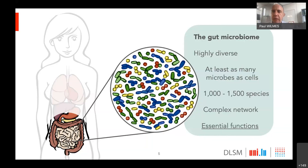What we have really learned over the last decade is that the microbiome, and in particular the gut microbiome, is highly diverse. We have on the order of 1,000 to 1,500 individual species of microorganisms. These can be bacteria, viruses, or more exotic microorganisms such as archaea — unicellular organisms similar to bacteria but distinct from them. We also have fungi and other microorganisms in the gut.